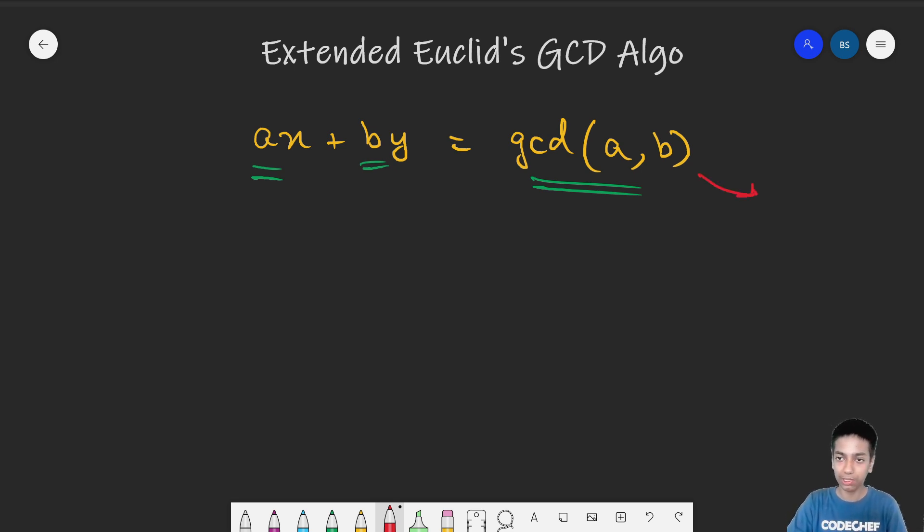This is also a recursive algorithm. Finding the GCD of two numbers can be done recursively as we discussed in the previous video. If we can find out the coefficients X and Y for some other values in a sub-problem, then using them, can we get X and Y? That is what we are going to discuss.